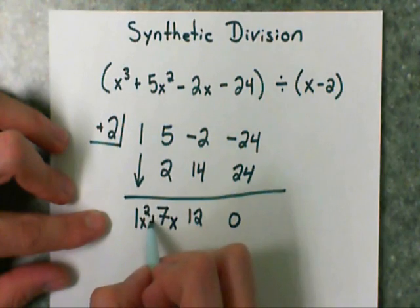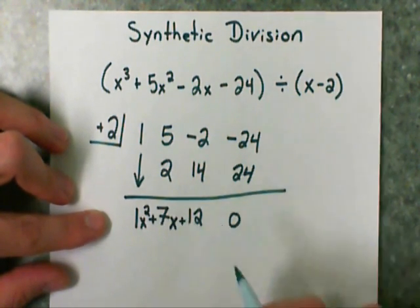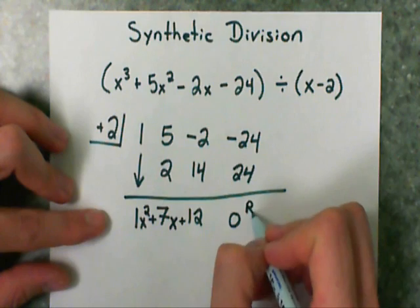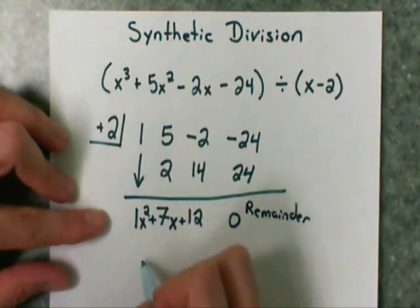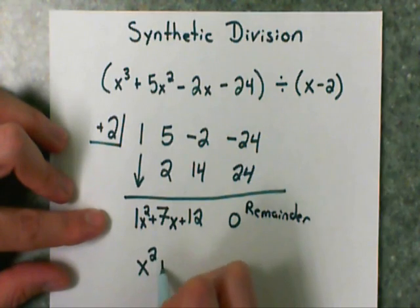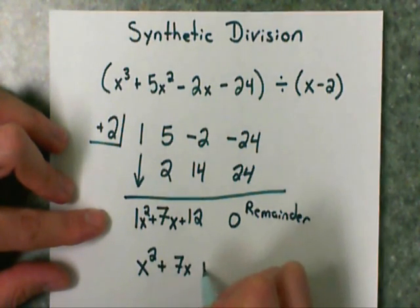I'm going to separate these with plus signs, so I have three terms. And this 0 over here would be our remainder, but we do not have a remainder. So to write it again, our answer is x squared plus 7x plus 12.